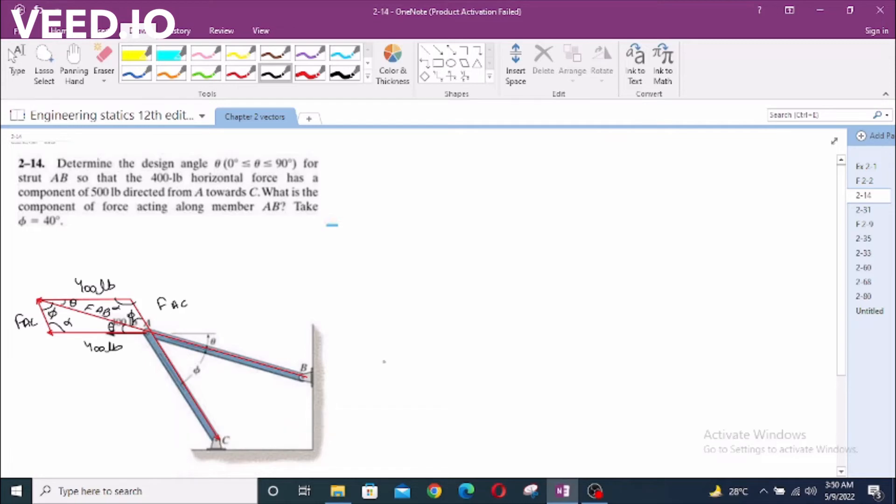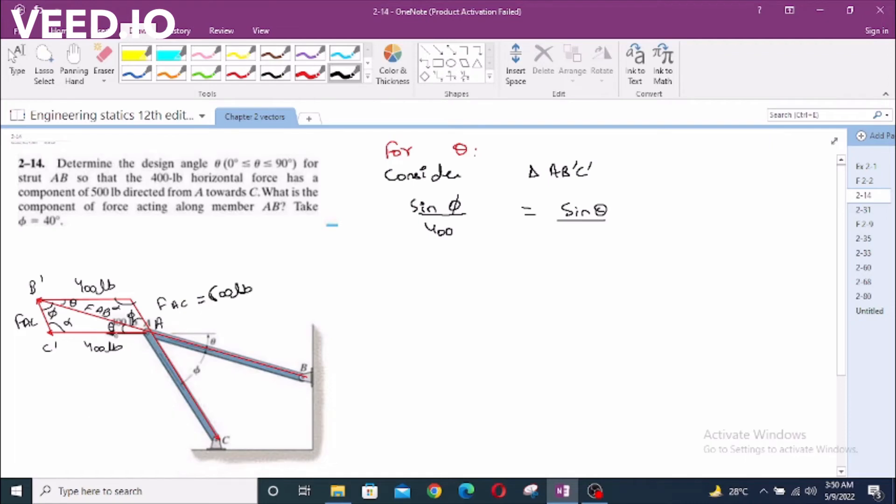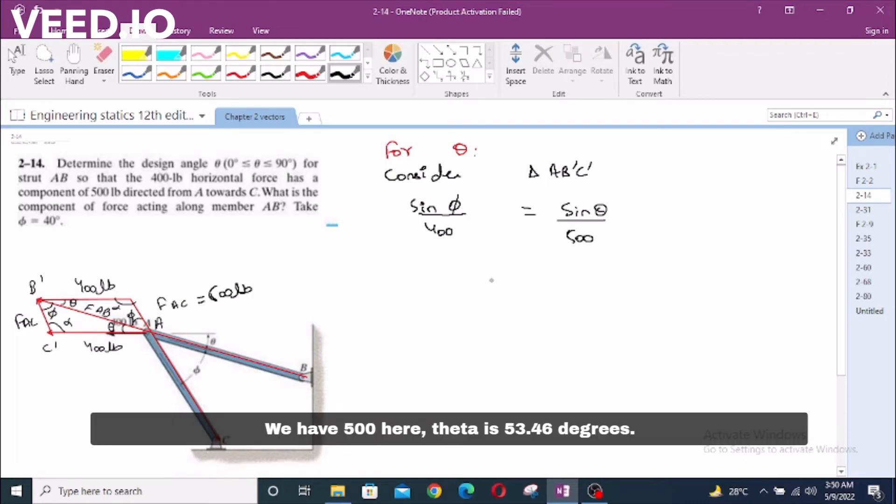Phi is given which is 40 degrees. For theta, consider triangle A, B dash, C dash. We can apply sine law. Sine phi over 400 equals sine theta over FAC. Now FAC is equal to 500 pounds. We have 500 here. Theta is 53.46 degrees.